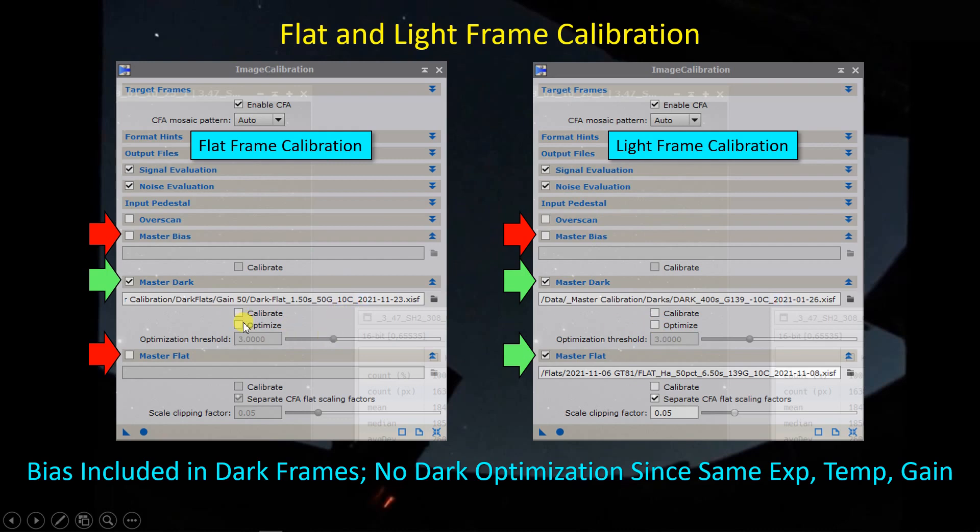Because I have specific dark frames tailored to the corresponding light or flat frames, there is no need to tick the optimize box here to alter the background of the dark frames to match the background of the light or the flat frame because they are already matched by virtue of the fact that I use the same imaging parameters of exposure, temperature, gain, etc. So that's why we don't have to tick that.